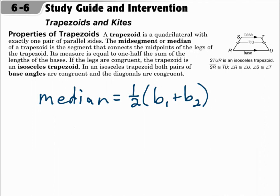This is lesson 6.6, Trapezoids and Kites. Your objectives are to recognize and apply the properties of trapezoids, including the medians of trapezoids, and to recognize and apply the properties of kites.